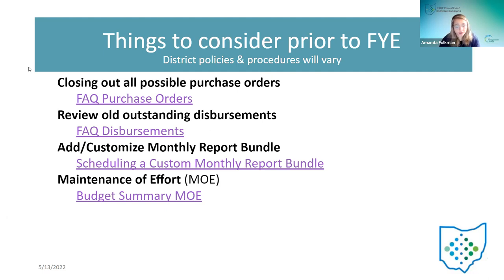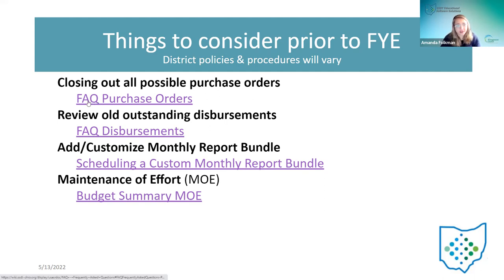The first suggestion is closing out all possible purchase orders. When the fiscal year end gets closed, any outstanding encumbrances will roll over and become prior year encumbrances on their accounts. If they have old outstanding purchase orders they don't need anymore, those could be affecting their balances. Reviewing and closing those is good practice. There's an FAQ section linked here about purchase orders and the different ways to close them.